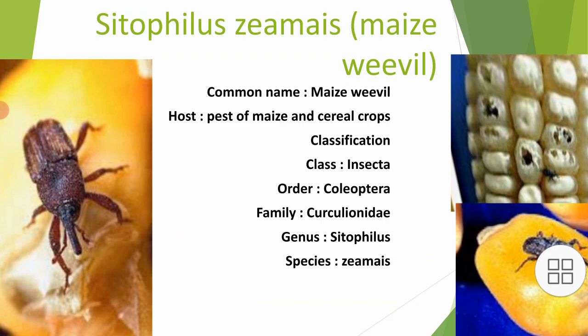Today we are going to discuss a plant pest named Sitophilus zeamais. It is one of the most important plant pests, commonly known as maize weevil or corn paste. They cause serious damage to grain stock under hot conditions. The corn we usually eat in daily life, such as popcorn, if stored in a storage house, is likely to get affected by Sitophilus zeamais.